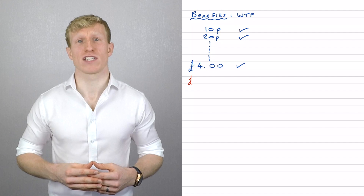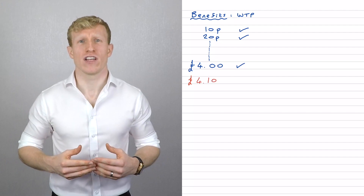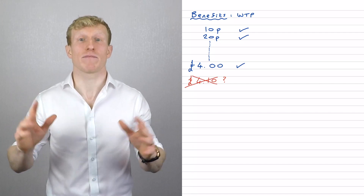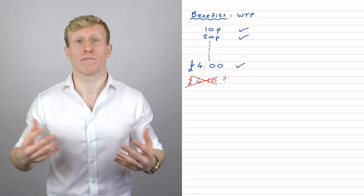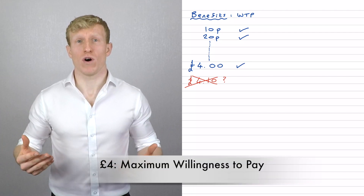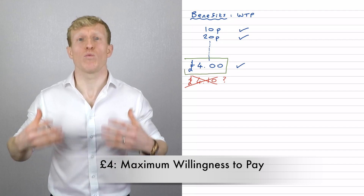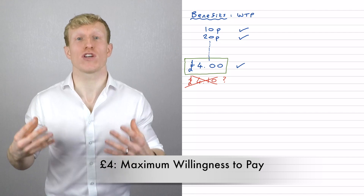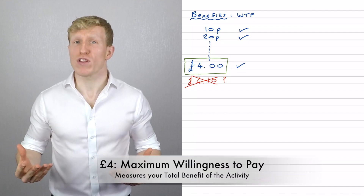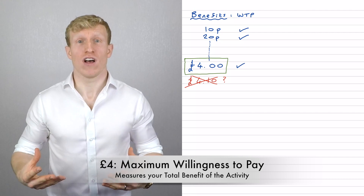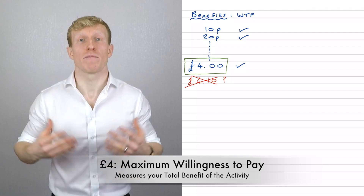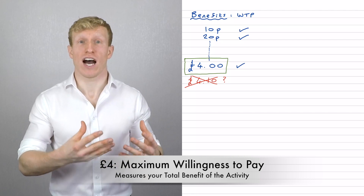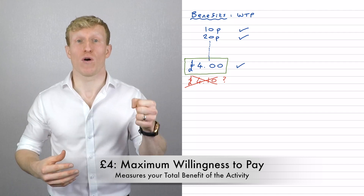Then your friend comes back and says, "What if I charge you four pounds ten?" And you think, after four pounds it's really not worth it to me — I'd rather just accept the film at a slightly lower volume than pay anything more than four pounds. So that four pounds represents your willingness to pay this other person to turn up the volume so you can enjoy the film a little bit more. What this is really measuring is your total benefit of having the volume turned up by somebody else. So we've been able to calculate what the benefit of the activity is — turning up the volume — and it's equal to four pounds.